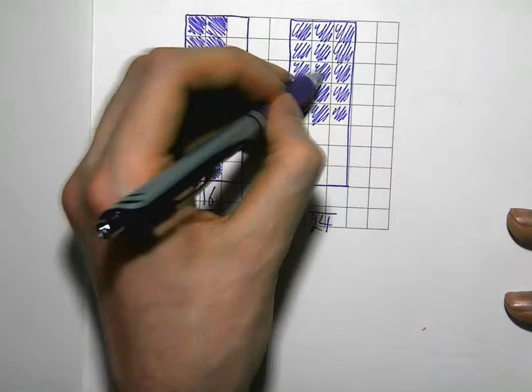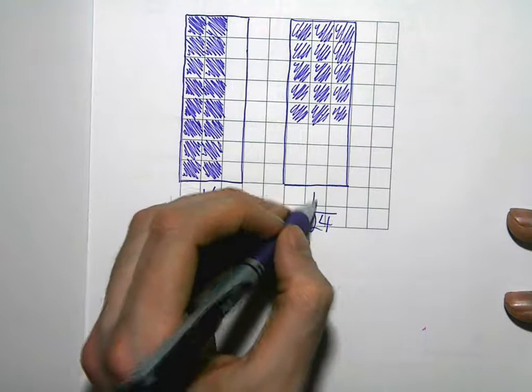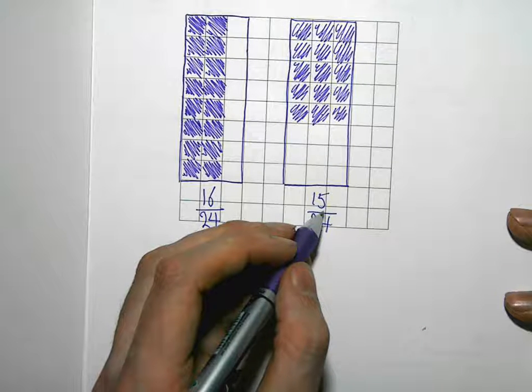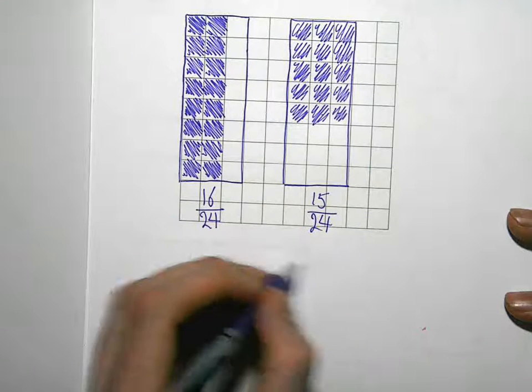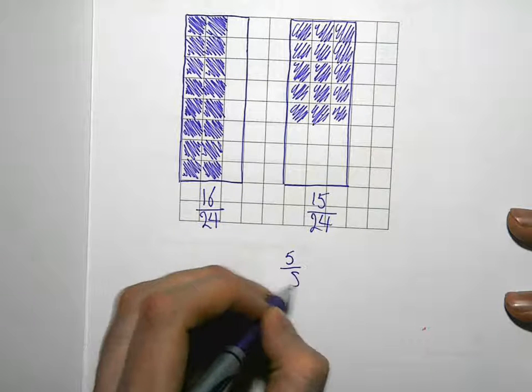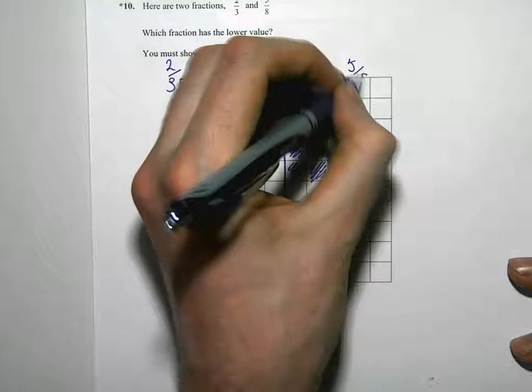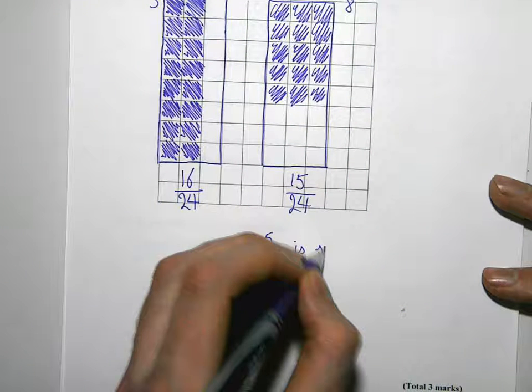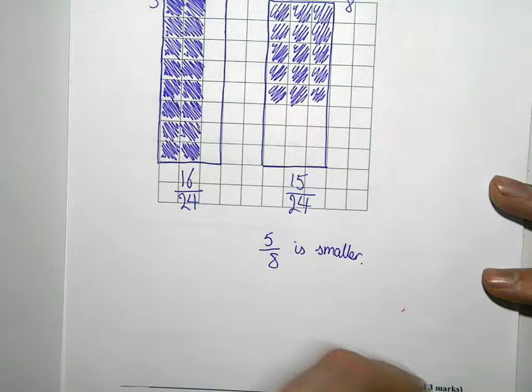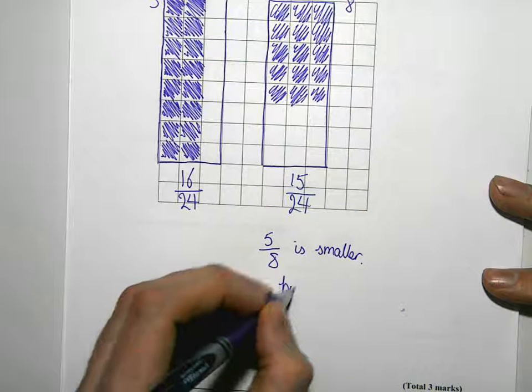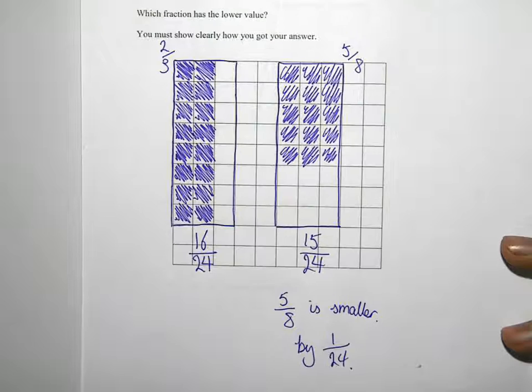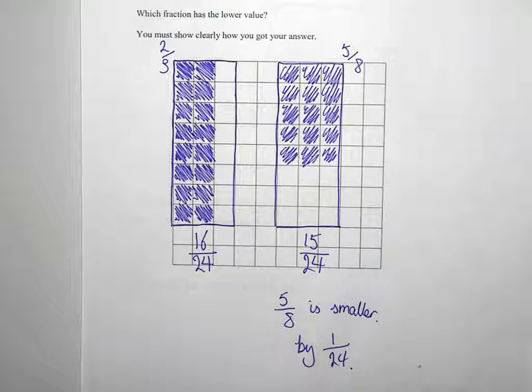So it's very close. But this one here has 1, 2, 3, 4, 5, 6, 7, 8, 9, 10, 11, 12, 13, 14, 15 coloured in. So it's very close. But this one here has 1 twenty-fourth less coloured in. So that means, maybe we should write this here. This was 2 thirds and this was the 5 eighths that we were comparing. So the 5 eighths is smaller by 1 twenty-fourth from our picture. So we can see 1 twenty-fourth smaller. OK.